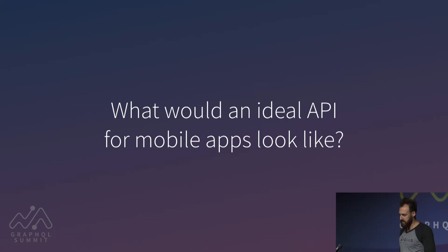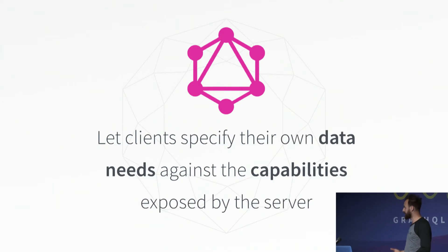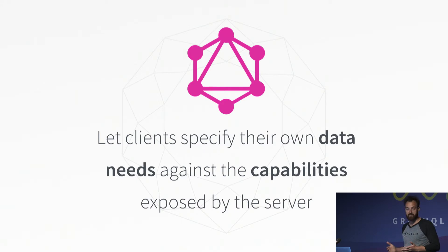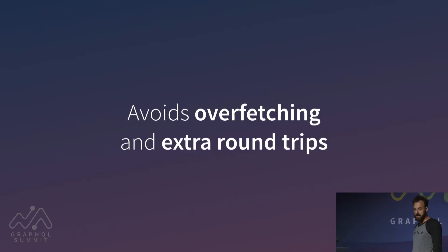I'd like to tell you a little bit more about why I think mobile developers should be really excited about GraphQL. The answer to what a great API for mobile apps would look like, if I had to say it in one sentence, is the ability for clients to specify their data needs against the capabilities that the server exposes. The first thing you might come up with — and this is especially important for mobile developers — is that there's a great performance benefit to using GraphQL over something like REST.